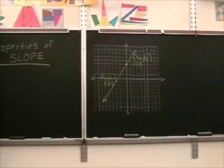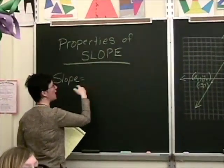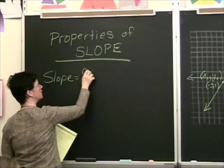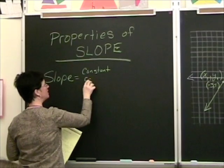We learned yesterday that the slope of a line is equal to that constant rate of change. So let's write constant rate of change.